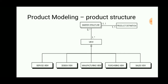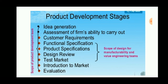These are all the product development stages, starting from idea generation. Customer requirements are gathered from marketing people, and functional specifications are identified. Product specifications are defined — for example, a mobile phone camera's megapixel count. Then a design review is conducted to verify the design. Test market surveys are conducted on a selected group of people, results are gathered, and the product is introduced to the market. Finally, the product is evaluated for its impact on society.